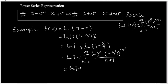You will find natural log of 7 minus x over 7, then I get negative x squared over 2 times 7 squared minus x to the 3 over 3 times 7 to the 3 minus x to the 4 over 4 times 7 to the 4 and so on.